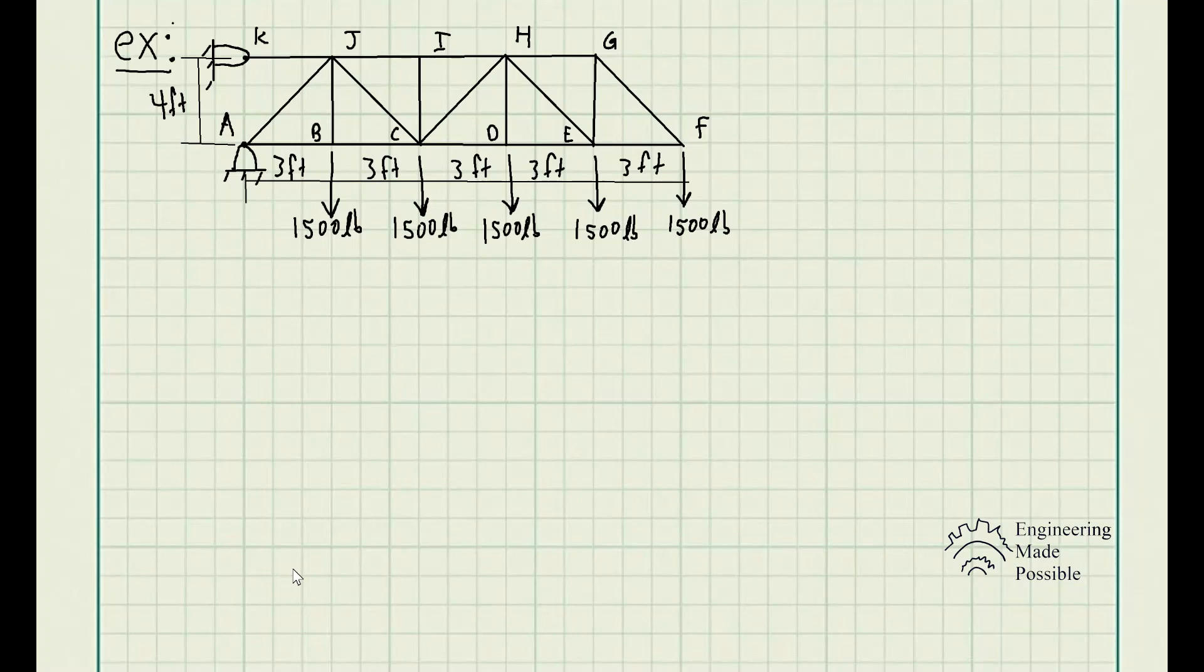So for this example, the problem statement is determine the force in members CD, HI, and CJ of the truss and state if the members are in tension or compression. So we have this truss with its supports at point A and K. Of course, we see that there are hinges and we have the necessary dimensions.